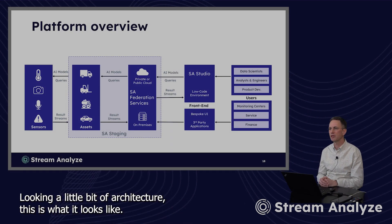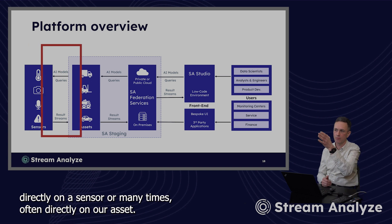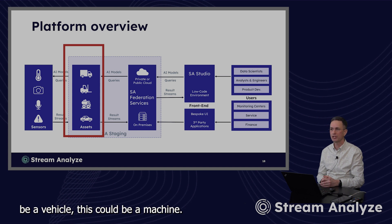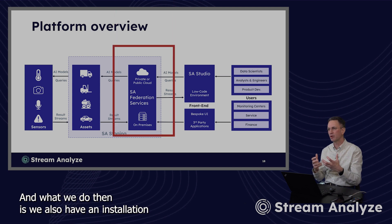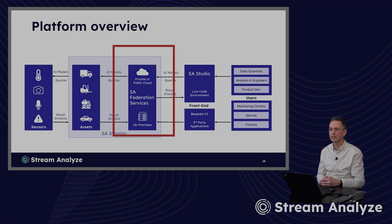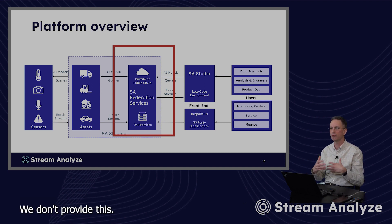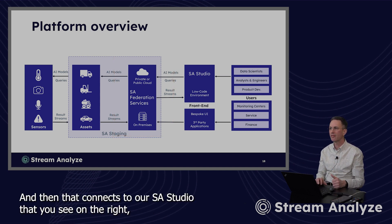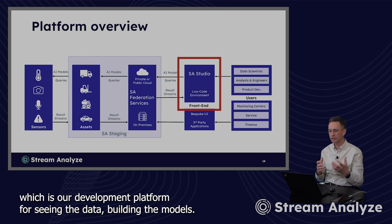Looking at a little bit of our architecture, this is what it looks like. If you see on the far left, we install our platform either directly on a sensor or many times often directly on an asset. This can be a vehicle, this can be a machine, this can be a small kind of device. And what we do then is we also have an installation centrally, either on a server or in a cloud. And this is never our cloud — we don't provide this, this will be our client's or our partners' cloud or server. And then that connects our studio that you see on the right, which is our development platform for seeing the data and building the models.